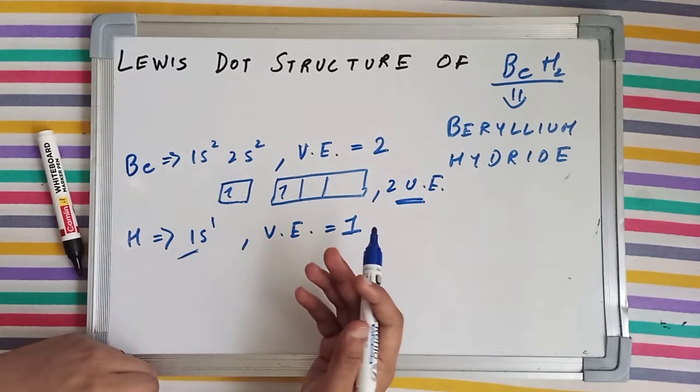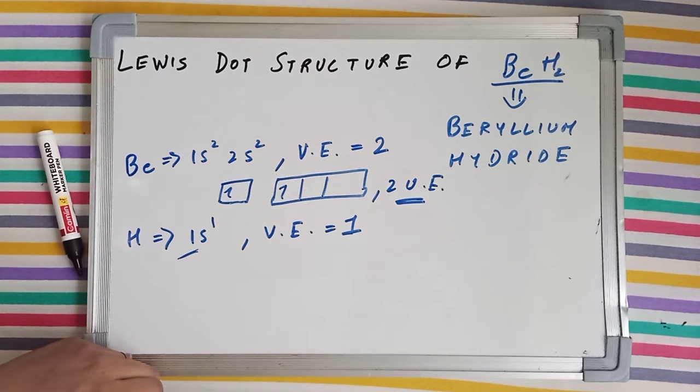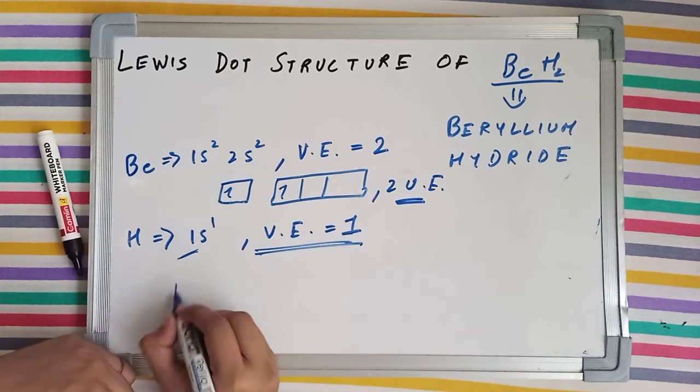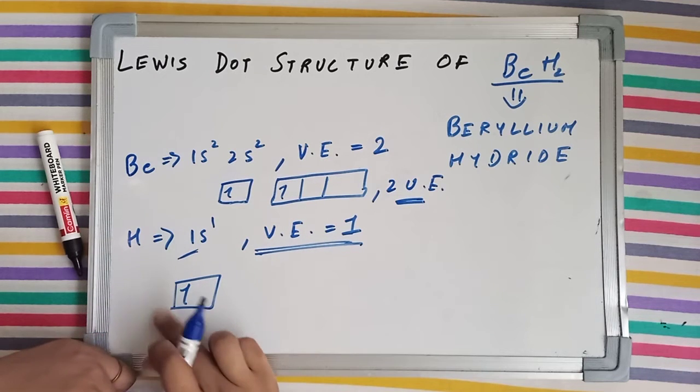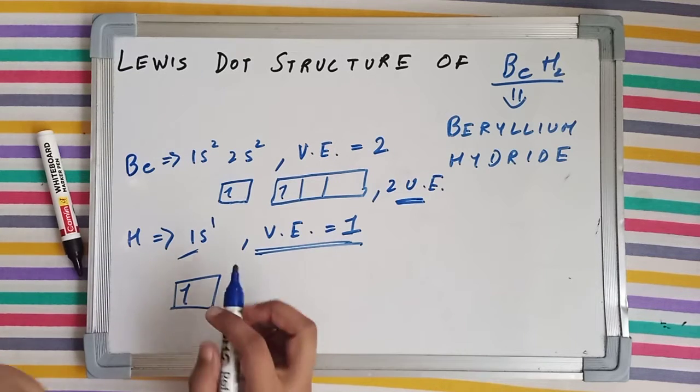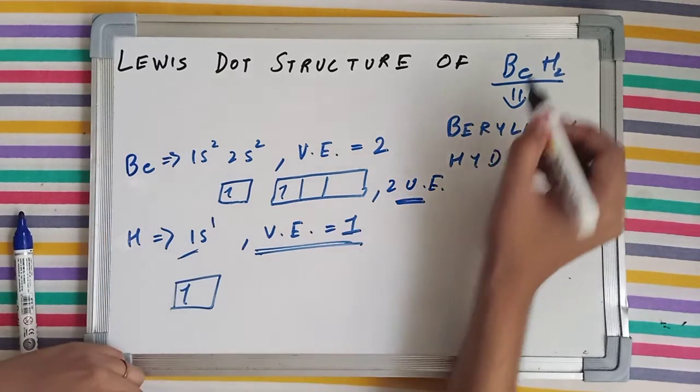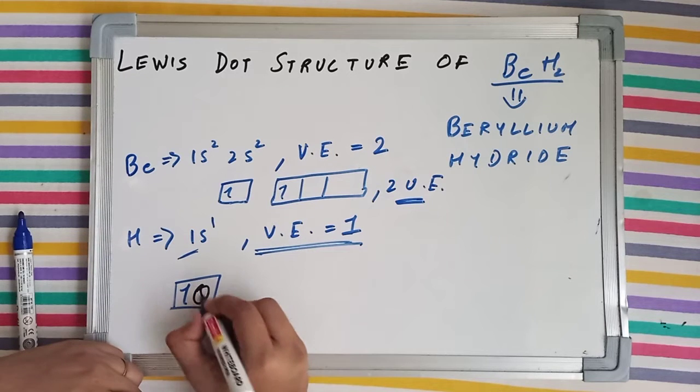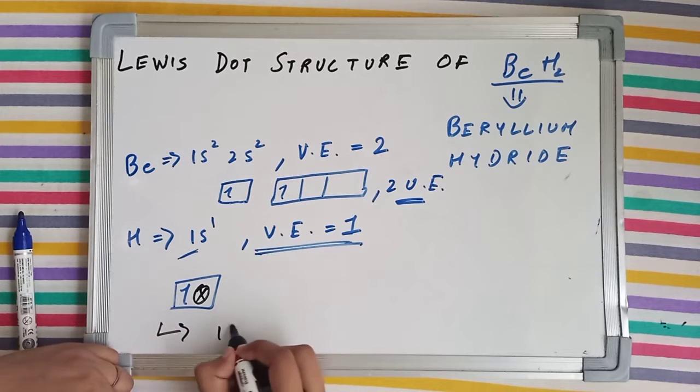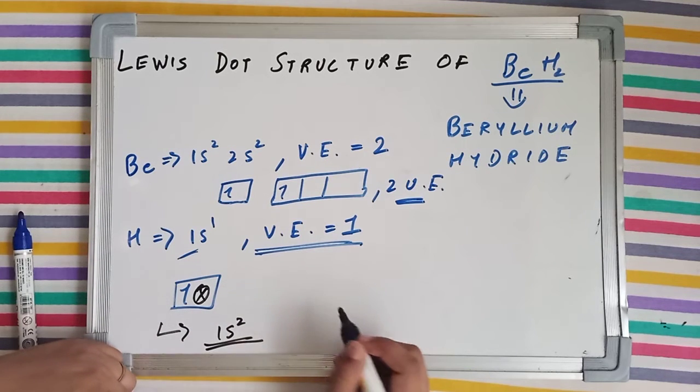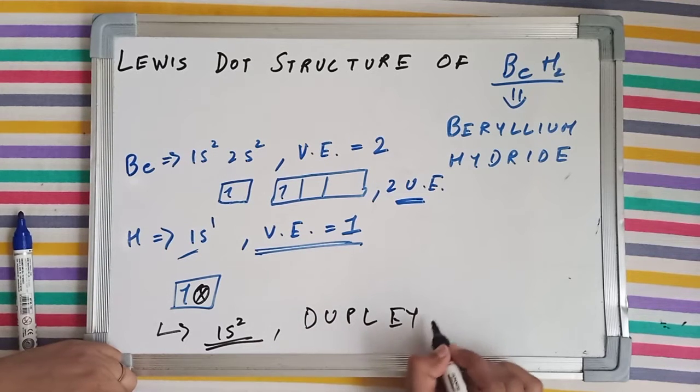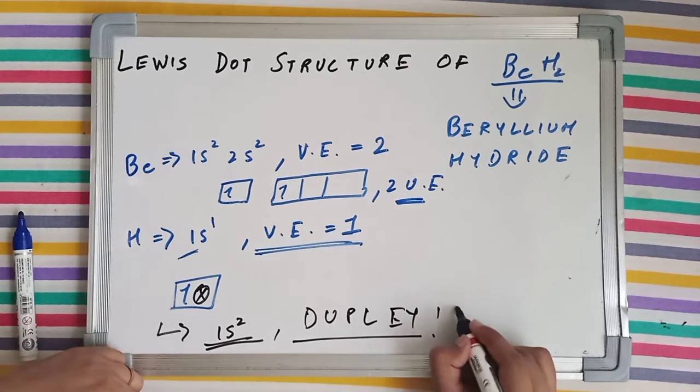Talking about hydrogen, you guys know that its valence shell is the first shell because it is the first element on the periodic table having just a single electron. Its orbital diagram is already in a non-paired form and it can take the electron of a different species. In this case, beryllium's electron will sit here and it will be paired. Then hydrogen will gain a stable electronic configuration of 1s² and hence it will complete its duplet.